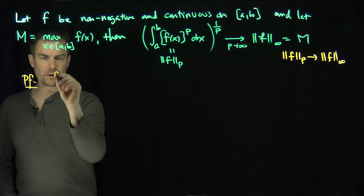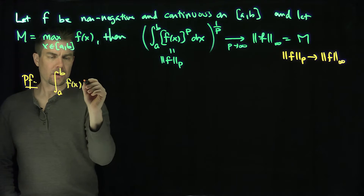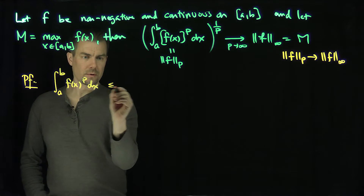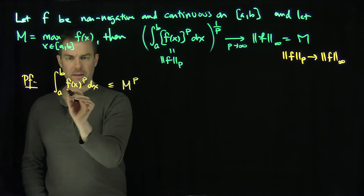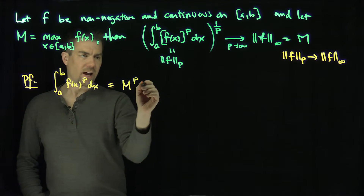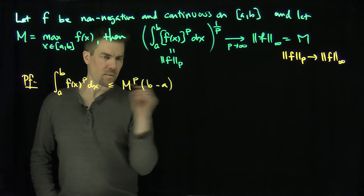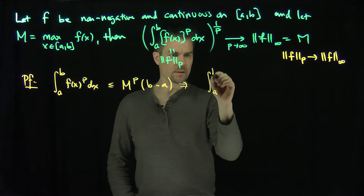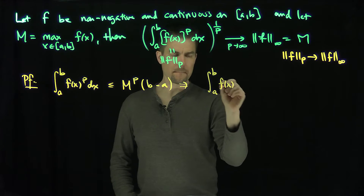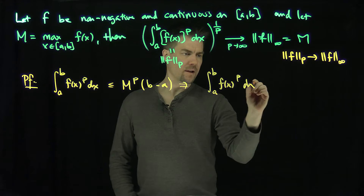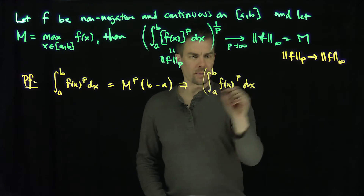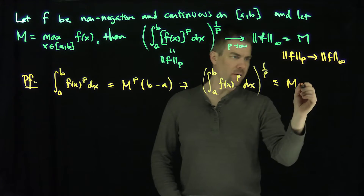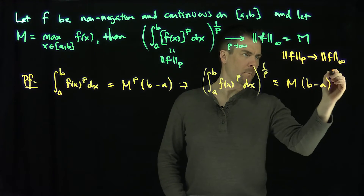The proof goes as follows. Clearly, the integral from a to b of f(x) to the power p dx is less than or equal to M to the p — I make the function as big as possible by replacing it with M — so it's M to the p times (b minus a). Now if I raise this inequality to the 1 over p, the integral from a to b of f(x) to the power p dx, to the 1 over p, is less than or equal to M times (b minus a) to the 1/p.